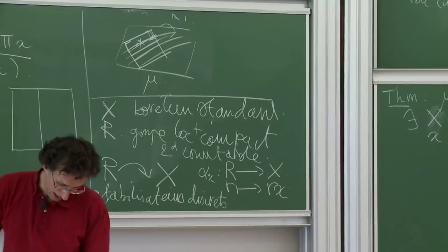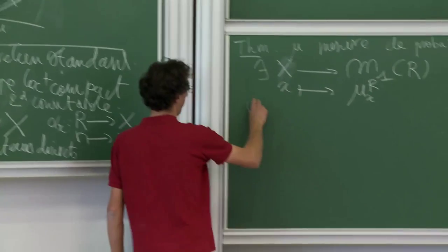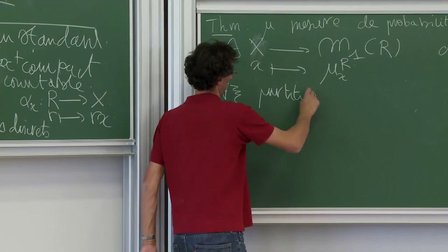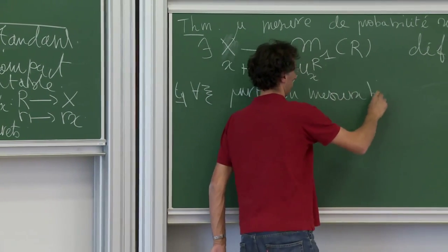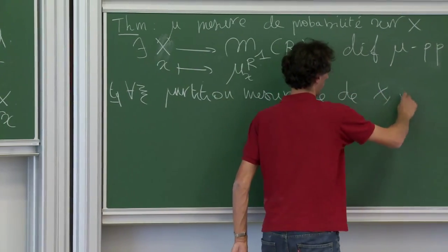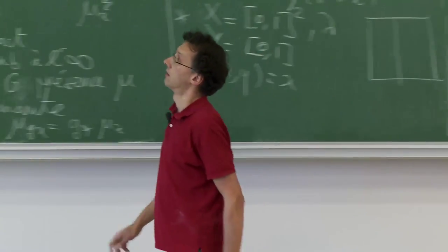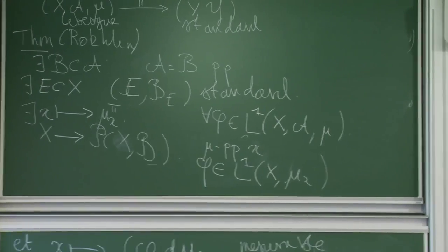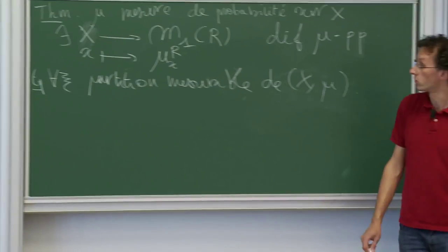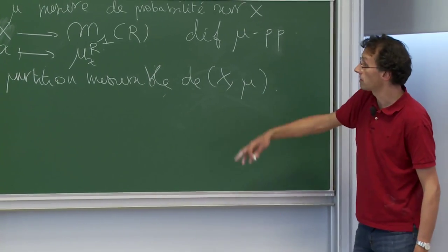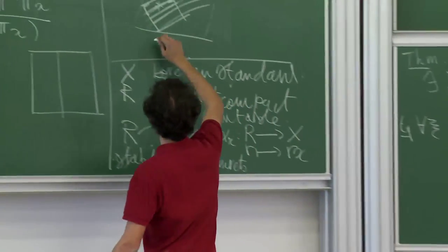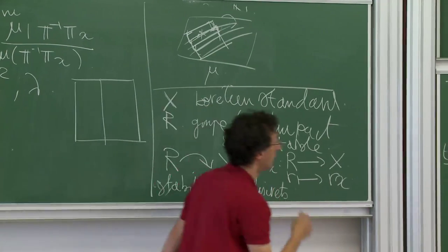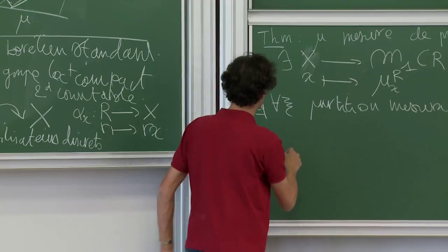La mesure mu_{x,R} n'est pas tout à fait une mesure — c'est une mesure à normalisation près — mais là c'est un quotient donc c'est bien défini. Ça ne dépend pas du multiple de mu_{x,R} qu'on choisit. Voilà cet objet qui apparaît. Pour définir les objets, on prend des mesures conditionnelles sur des petites boîtes et on recolle — et on obtient une mesure définie à une constante près sur le groupe.